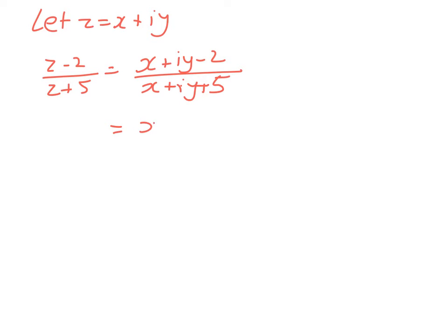So let z equal x plus iy and we're looking for z minus 2 over z plus 5. So substitute in x plus iy minus 2 over x plus iy plus 5. Now make sure you check back the question at this point to see that you've got those pluses and minuses right before we do a whole lot of work. I'm going to reorder those to get the real part first and then the complex part. x minus 2 plus iy over x plus 5 plus iy.